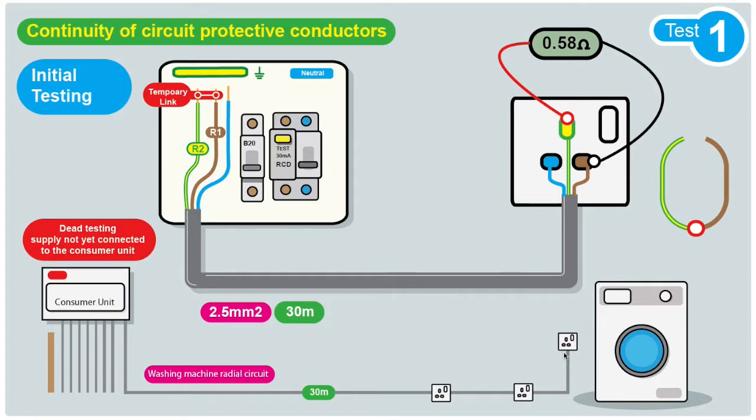It's quite a simple test. We link these out and take a reading at each socket with our test meter. In this case we've got a reading of 0.58 ohms at the furthest point, and we call this our R1 plus R2.